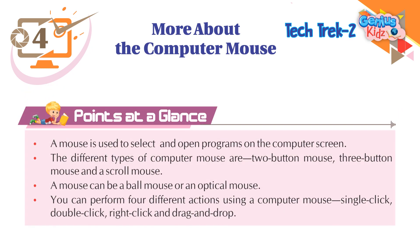Points at a glance. A mouse is used to select and open programs on the computer screen. The different types of computer mouse are 2-button mouse, 3-button mouse, and scroll mouse. A mouse can be a ball mouse or an optical mouse. You can perform 4 different actions using a computer mouse: single click, double click, right click, and drag and drop.